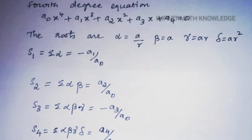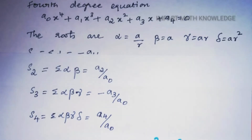S1, sum of the roots taken 1 at a time, equals −a1/a0. S2, sum of the roots taken 2 at a time, equals a2/a0. S3, sum of the roots taken 3 at a time, equals −a3/a0. S4, product of the roots, equals a4/a0.